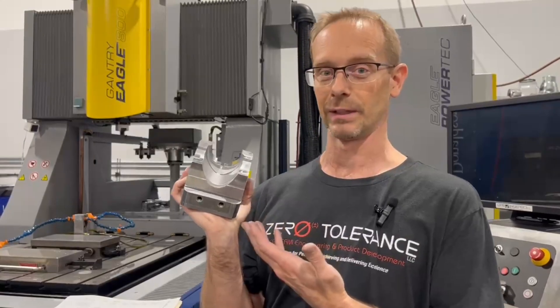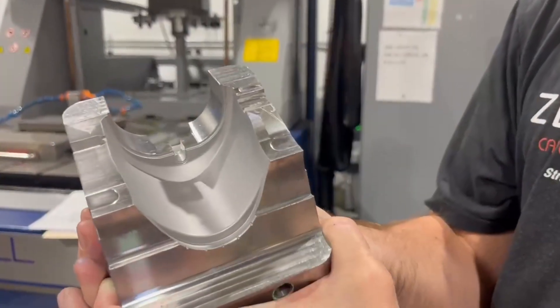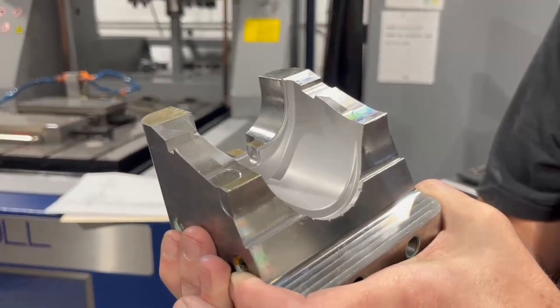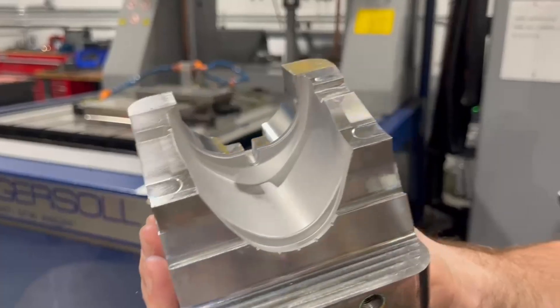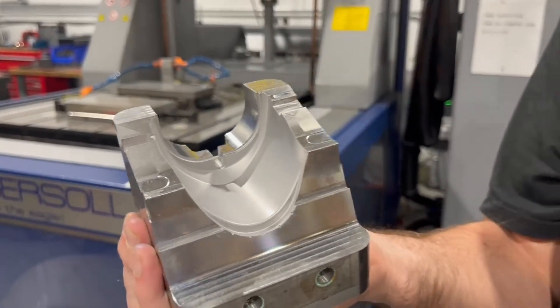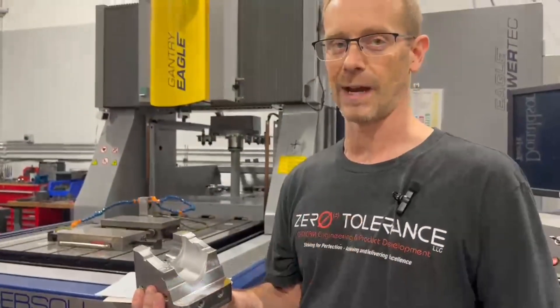So this is actually an example that we can kind of show what I'm talking about. If you look at this, this is actually an overmolded part, and it will have a rubberish type material.